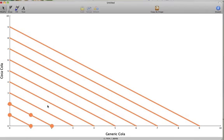Once we have our indifference curves, we can combine this with our budget line to find the optimal consumption point. That is, how many bottles of Coca-Cola and Genericola am I willing and able to buy?